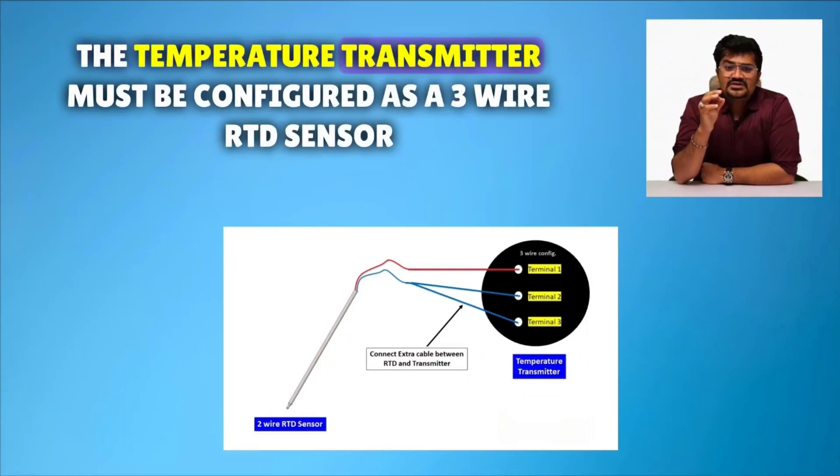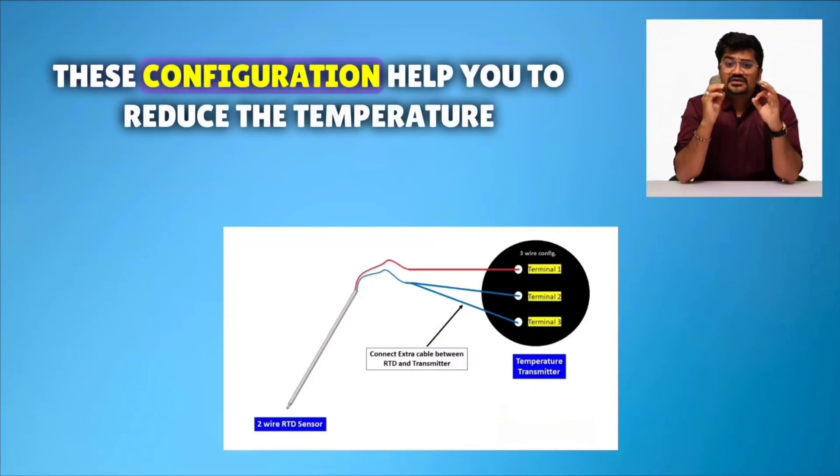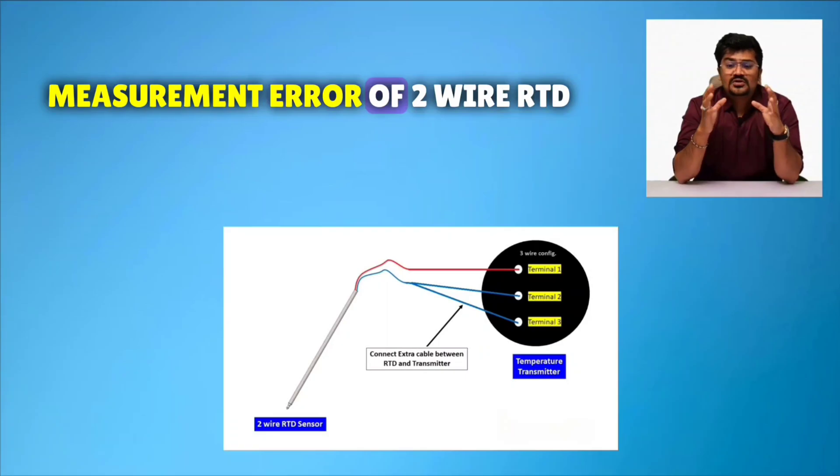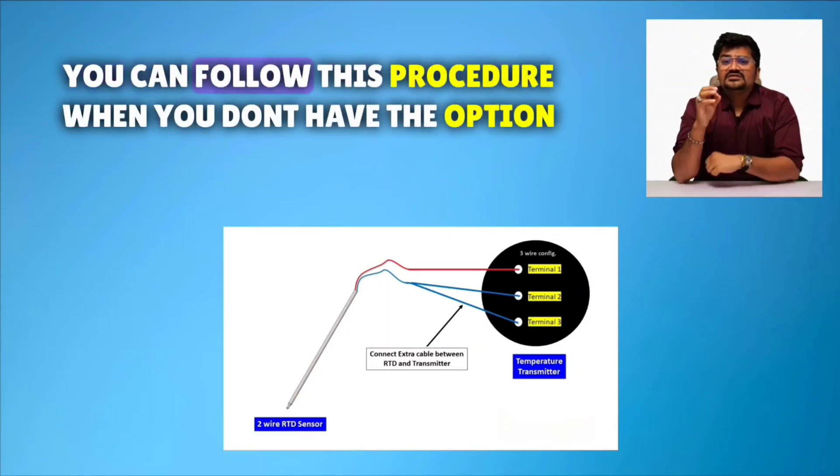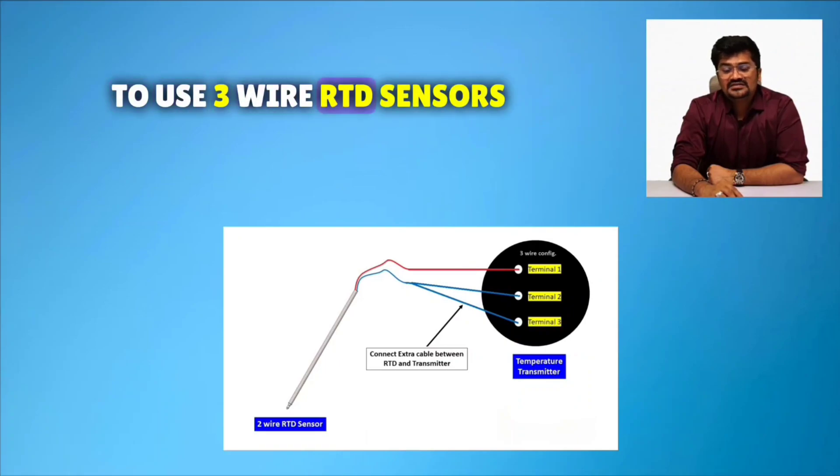The temperature transmitter must be configured as a 3-wire RTD sensor. This configuration helps you to reduce the temperature measurement error of 2-wire RTD. You can follow this procedure when you don't have the option to use 3-wire RTD sensors.